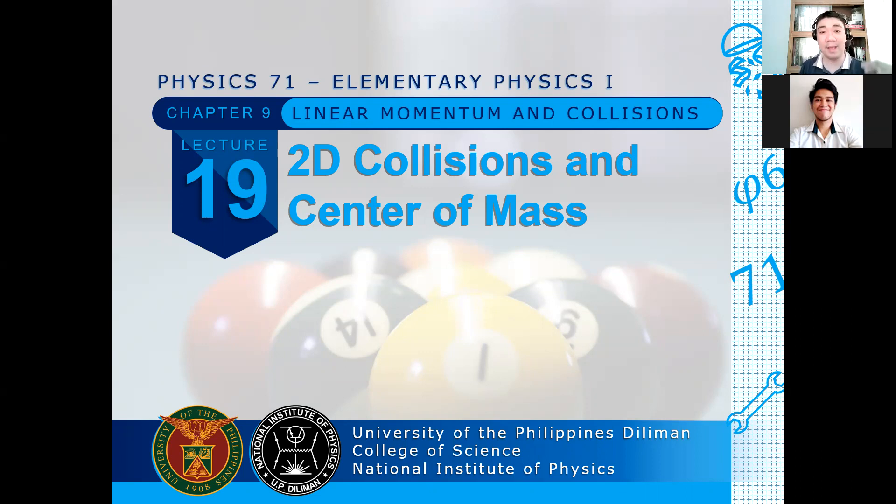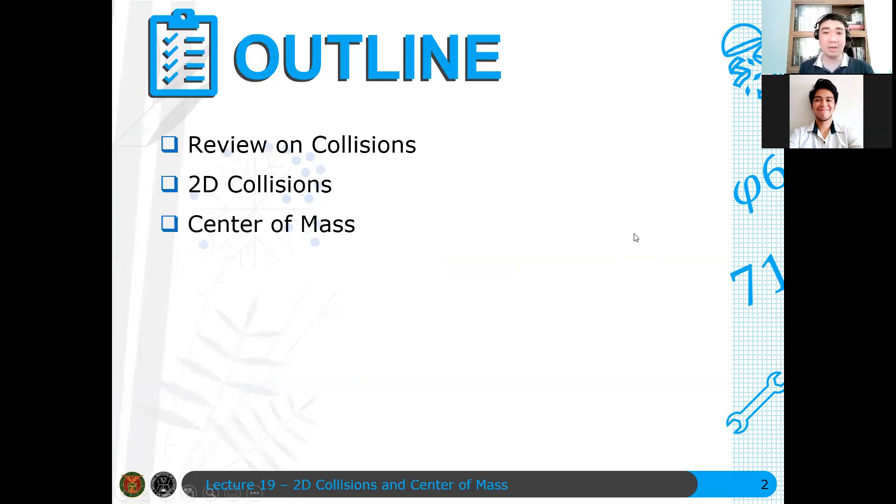You need an explicit relationship between the final velocities in 1D to have two equations. Otherwise, you cannot solve it. However, there's a different story for 2D collisions and we will see that when we solve some problems. For the meantime, here's an outline of this discussion.